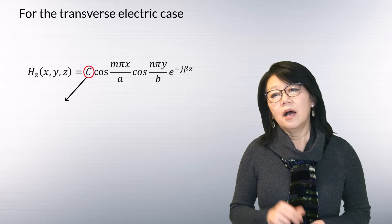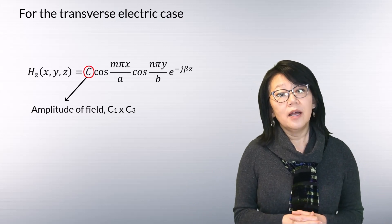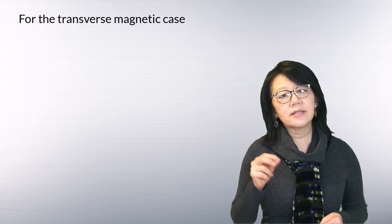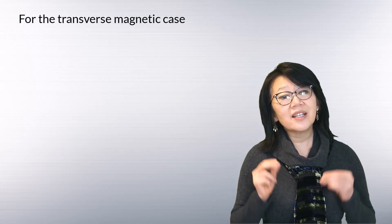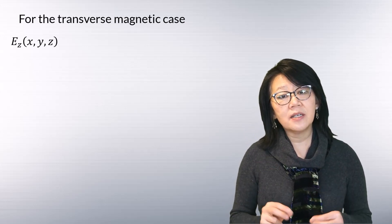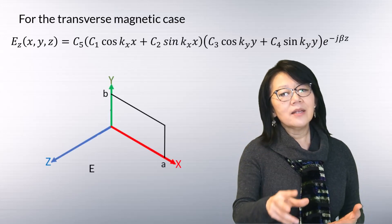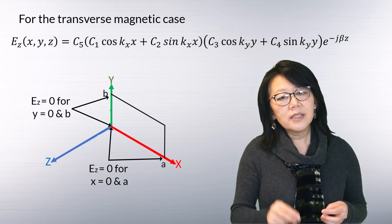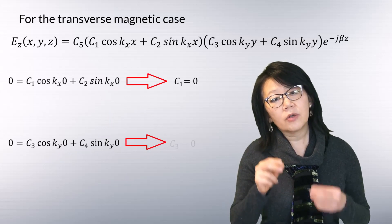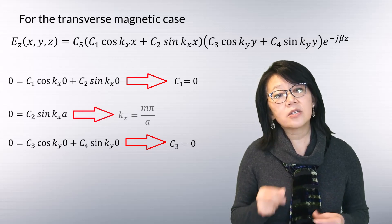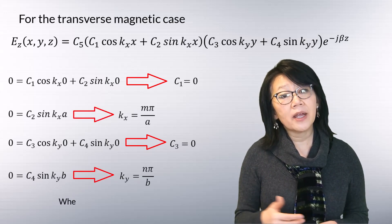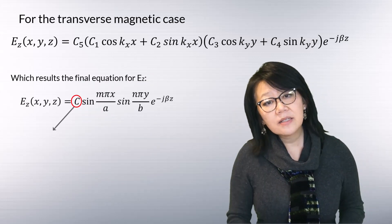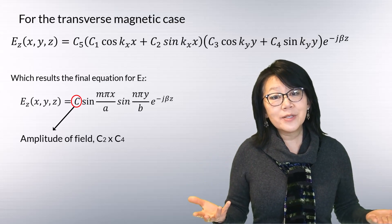The constant C is the product of the integration constants c1 and c3, and it represents the amplitude of the field. For the TM case, the solution for the longitudinal electric field component Ez is shown. Applying the boundary conditions as done for the TE modes gives c1 and c3 equal to zero, with kx equals m·pi over a and ky equals n·pi over b.